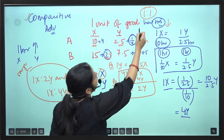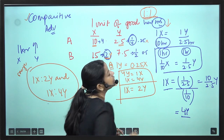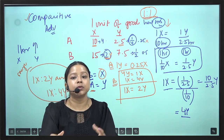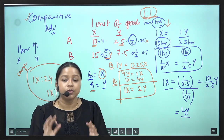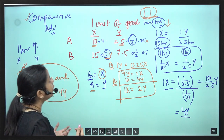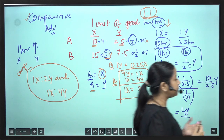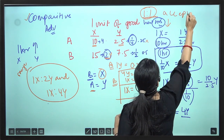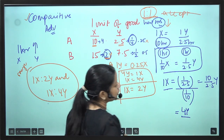Now the question says the proposed terms of trade is 1:1 — 1X for 1Y. If we go to both Country A and Country B and say come trade at 1:1, will they accept? Will they be accepting 1:1? No, they will not accept. They will reject the 1:1 terms.